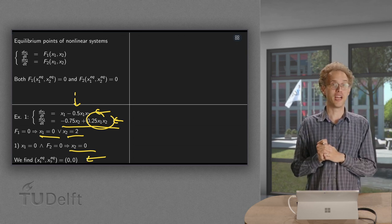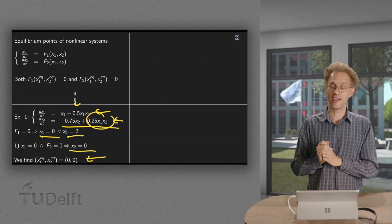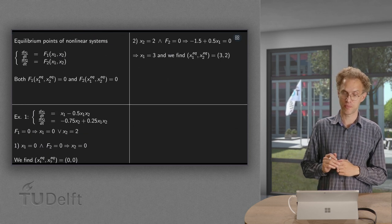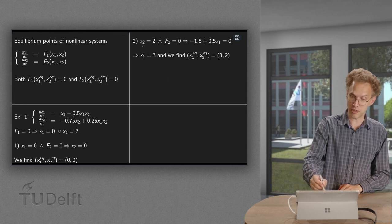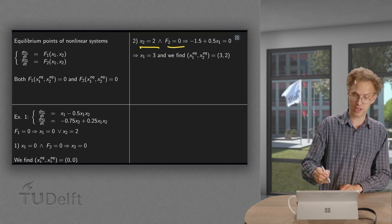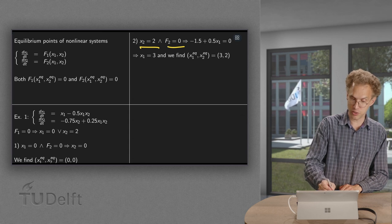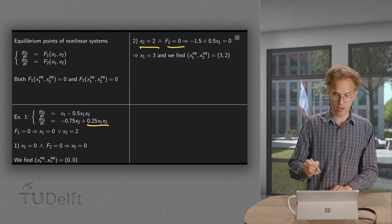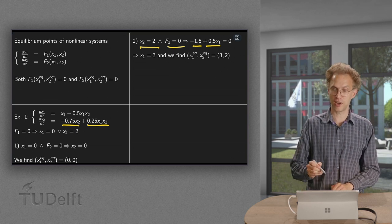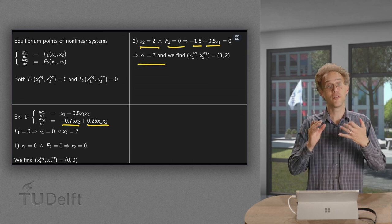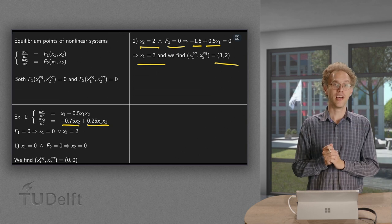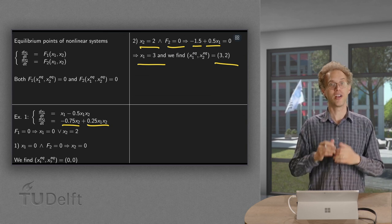Which is not a very nice point to be in if you think about our lions and zebras. Let's see whether we have more equilibrium points. Well, we had x2 equals two. That was the other option. Then we also need f2 to be equal to zero. But now we have x2 equals two. So we plug it in over here and over here. So we get minus 1.5 plus half x1 equals zero, and we solve and find x1 equals three. So we find a second equilibrium point, (3, 2), which is of course a nicer point to be in for our lions and zebras.